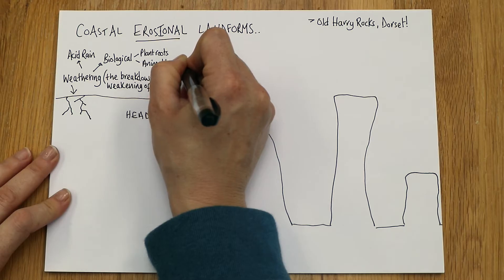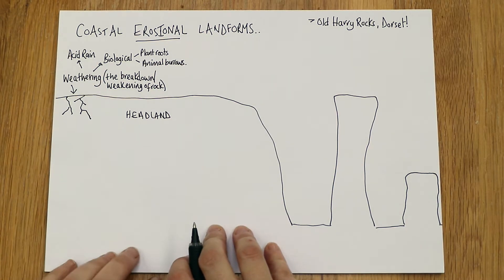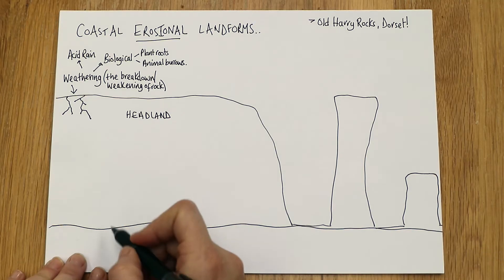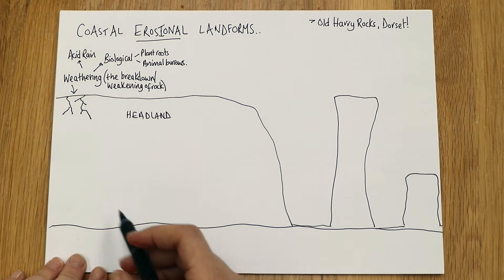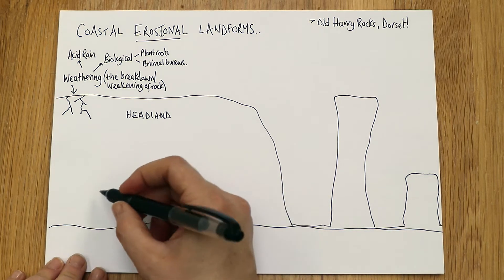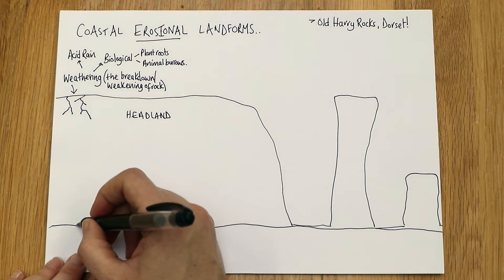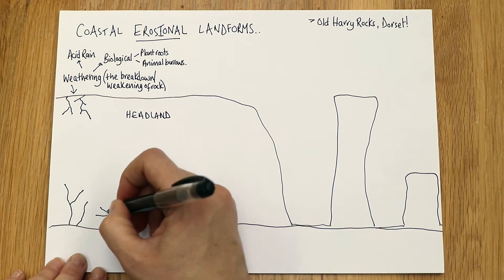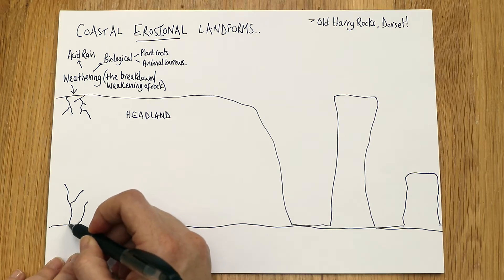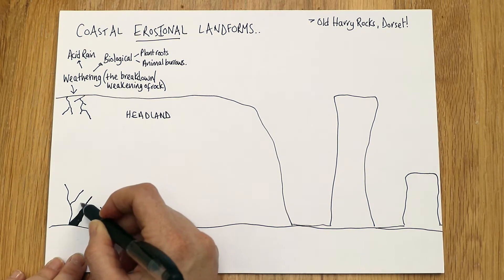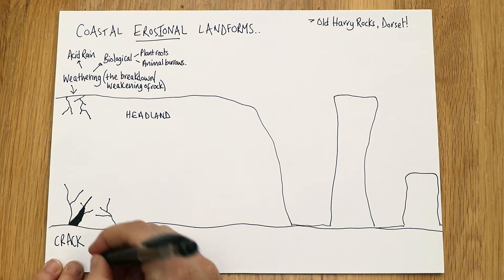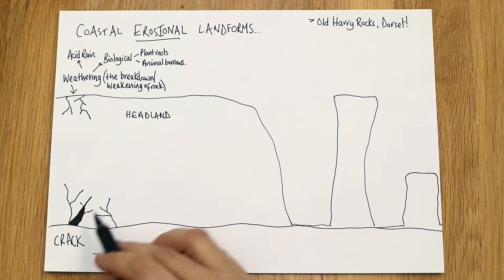This is a coast study, so we need to focus on what's happening at the water as well. All the way down the headland there will be cracks and weaknesses from weathering, but down here where the water and waves are hitting the headland, quite significant cracks are being formed. Some of them can be quite wide — quite deep cracks, not quite caves but not far off. Let's write the word 'crack' there.